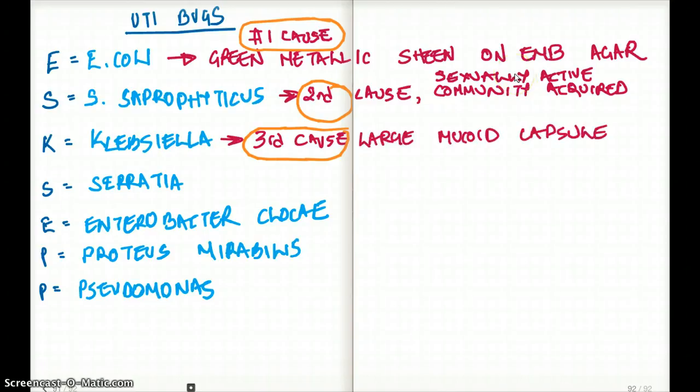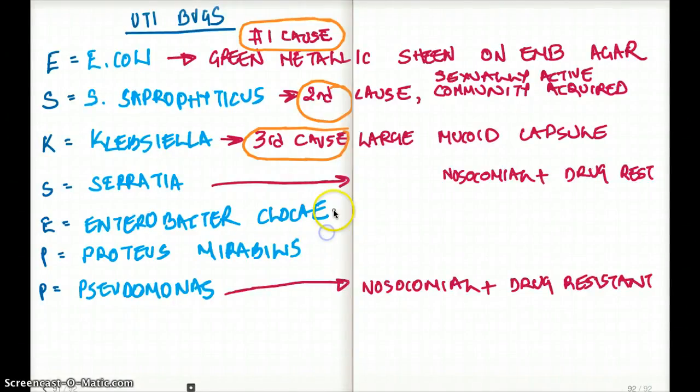Now what if they say what's the cause of UTI which are going to be nosocomial and drug resistant? What does nosocomial mean? Nosocomial means that hospital acquired. You were hospitalized for some other reason and you ended up getting this resistant bug. So there is really three bugs that can be nosocomial: Serratia, Pseudomonas, and Enterobacter.